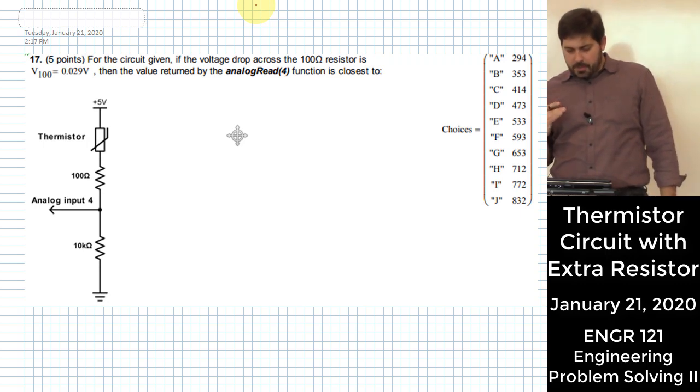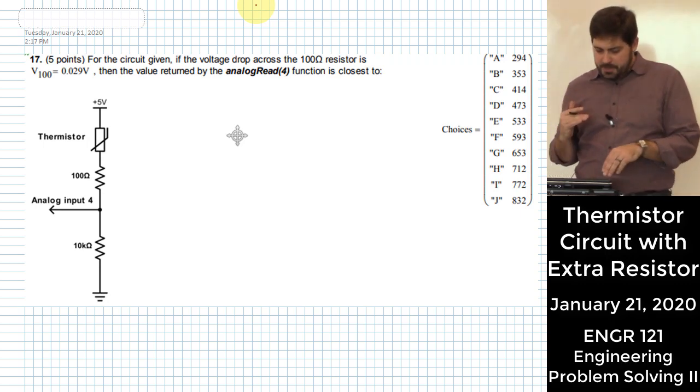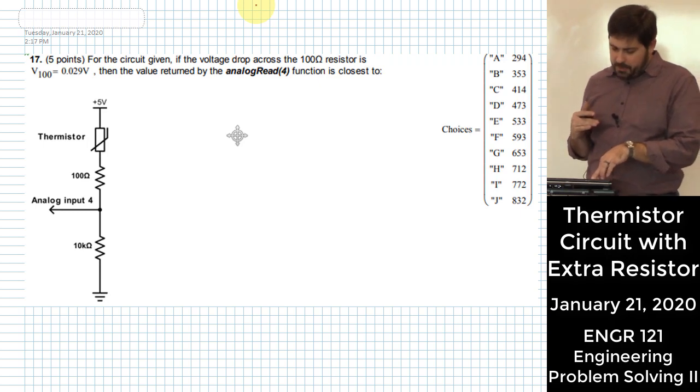For the circuit given, if the voltage drop across the 100 ohm resistor is V100 equal 0.029 volts, then the value returned by analog read 4 function is closest to,